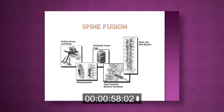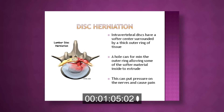These are different types of instrumentation that your surgeon will choose to use depending on the type of surgery you require. Intervertebral discs have a softer center surrounded by a thick outer ring of tissue. A hole can form in the outer ring allowing some of the softer material inside to extrude or herniate, which can put pressure on the nerves and cause pain.